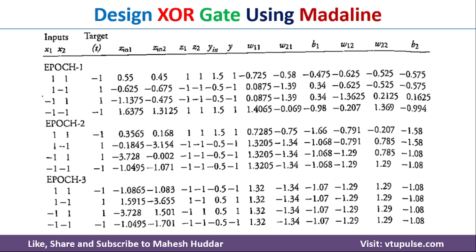A complete calculation table has been shown for the first input (1, 1) where the target is minus 1. After computing Z1_in, Z2_in, Z1, Z2, Yin, and Y, the calculated output is 1 while the target is minus 1 — a mismatch, so weights W11, W21, B1, W12, W22, and B2 are updated. The same process is repeated for all four inputs in each epoch.